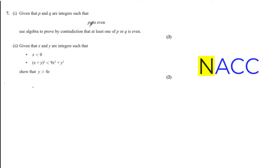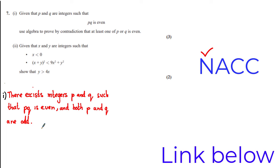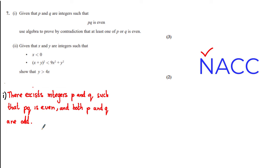Given that pq is even and we've been asked to prove that at least one of p or q is even, the negation of this statement is that none of p and q are even — that is, p and q are both odd. So we can start by saying there exist integers p and q such that their product is even but both p and q are odd. Do check out my tutorial to learn how to come up with negation statements.